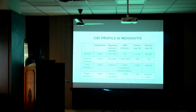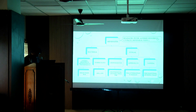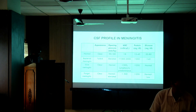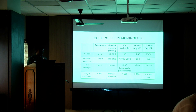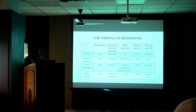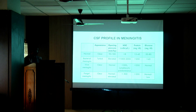This is the CSF profile in patients with meningitis. In bacterial meningitis, the appearance will be turbid, with elevated opening pressure, high WBC count, protein more than 200 mg/dL, and very low glucose. In viral meningitis, the appearance will be clear, opening pressure normal, lymphocyte-predominant cells not as high as bacterial, protein less than 200 mg/dL, and glucose normal. In fungal meningitis, the appearance will be clear, opening pressure normal or elevated, WBC less than 500, protein more than 200 mg/dL, and glucose normal to low.